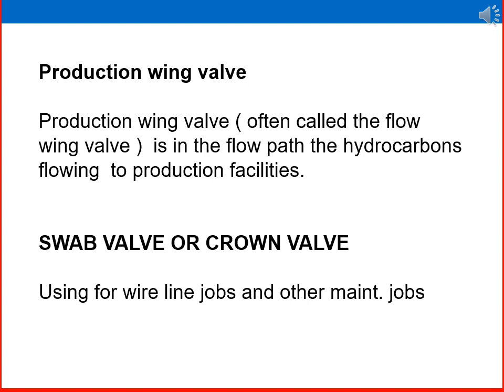Two other important valves in the Christmas tree are the production wing valve and the swab valve. The production wing valve — often called the flowing valve — is in the flow path for hydrocarbons flowing to the facilities. It is the main valve to divert flow from a well to a production facility. The swab valve, or crown valve, is used for wireline jobs — that is, maintenance jobs in the subsurface reservoir or flowing tubing. In normal production, the swab valve is closed and the production wing valve is open.